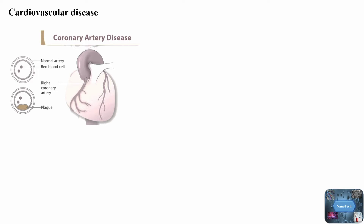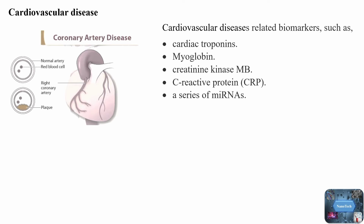A maladaptive immune response and dysregulation of cholesterol metabolism initiates the formation of atherosclerotic plaques. The branches off the aortic root, namely the left and right coronary arteries, supply oxygen-rich blood to the myocardium. Atherosclerotic lesions in the coronary arteries can cause lumen obstruction, resulting in myocardial ischemia, hypoxia, and even necrosis, known as coronary atherosclerotic heart disease or coronary artery disease. Nanotechnology approaches to detect cardiovascular diseases: